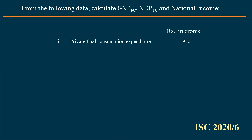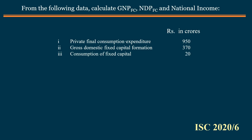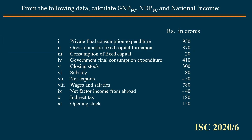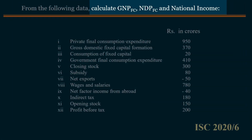Given data: Private Final Consumption Expenditure 950 Crores, Gross Domestic Fixed Capital Formation 370 Crores, Consumption of Fixed Capital 20 Crores, Government Final Consumption Expenditure 410 Crores, Closing Stock 300 Crores, Subsidy 80 Crores, Net Exports negative 50 Crores, Wages and Salaries 780 Crores, Net Factor Income from Abroad negative 40 Crores, Indirect Tax 180 Crores, Opening Stock 150 Crores, Profit Before Tax 200 Crores.